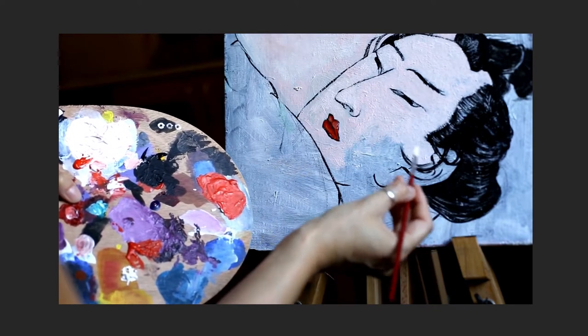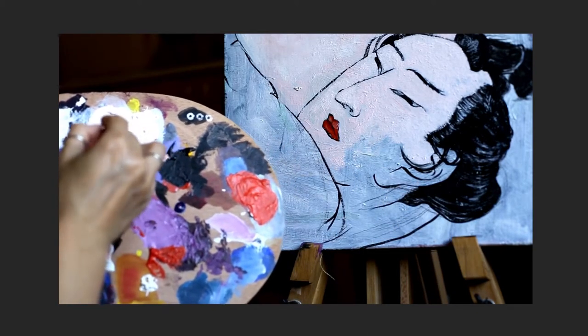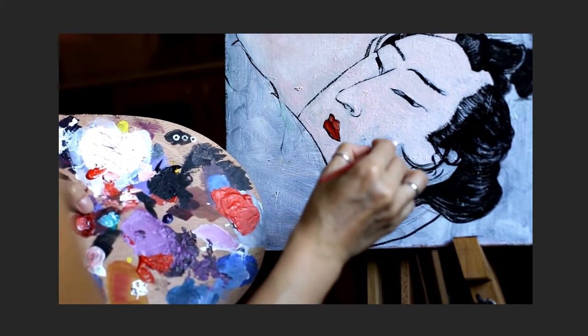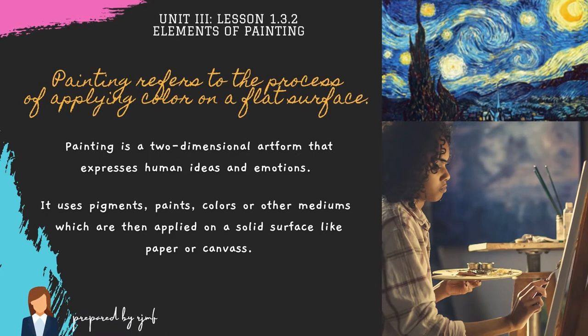In discussing visual arts, painting comes as an essential foundation. Painting refers to the process of applying color on a flat surface. It is a two-dimensional art form that expresses human ideas and emotions. It uses pigments, paints, colors, or other mediums which are then applied on a solid surface like paper or canvas.